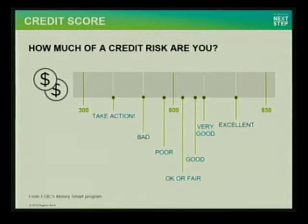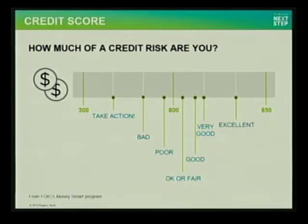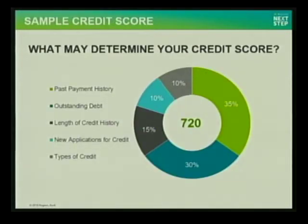How much of a credit risk are you? There are several different scales, but using one generic scale, scores range up to around 850, which is excellent — the best you can get. I've been in the banking business since 1994 and I've seen a whole lot of credit. I could probably count on one or two hands an 850 score — you just don't see it very often. It comes with a lot of dedication and time. But 'very good' is right there below 'excellent,' so just be mindful of where you are when you pull your credit score.